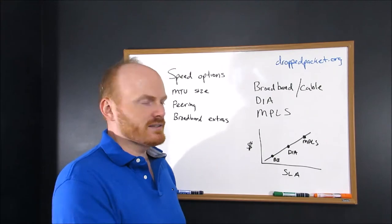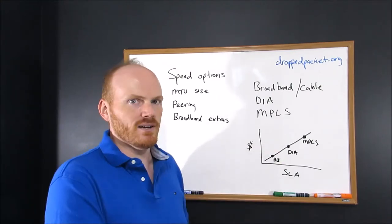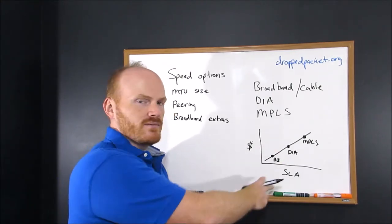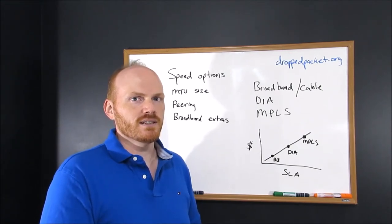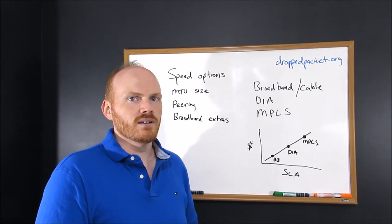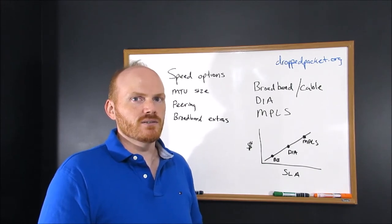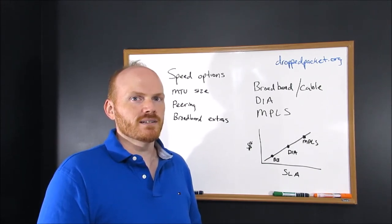Now the easiest way to compare these three is just draw a simple graph: Cost versus SLA. Broadband is going to be your cheapest cost, but you're going to get the least amount of SLAs with it. Typically you get very little or no performance based SLAs and little to no repair SLAs.